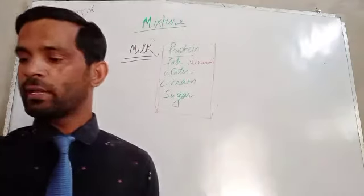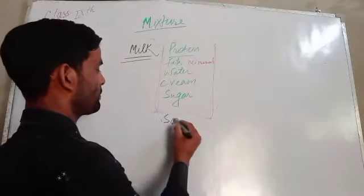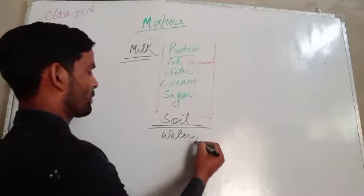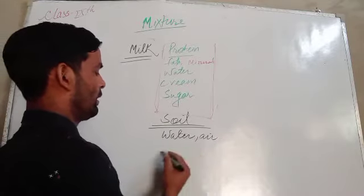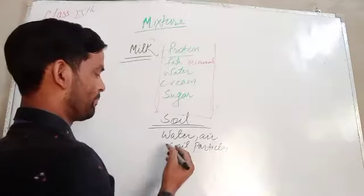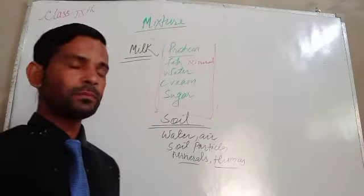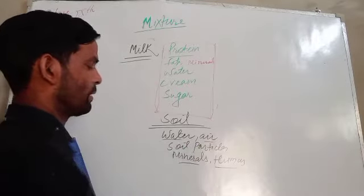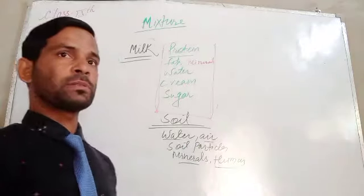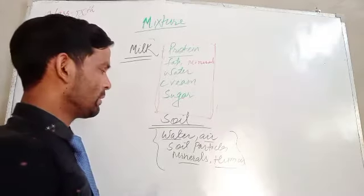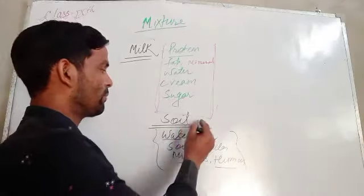Another form of mixture is soil. Soil is another form of a mixture because it can contain water, air, soil particles, different types of soils, minerals, humus, etc. These are different forms of atoms and molecules, and they contain different types of components that are not chemically combined to one another. So soil is also a form of mixture.